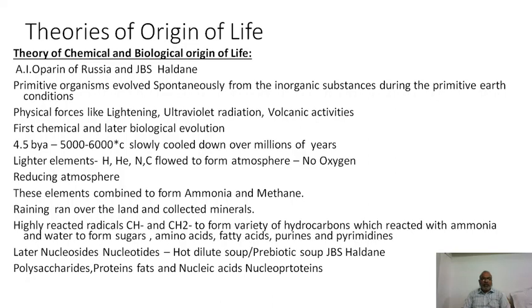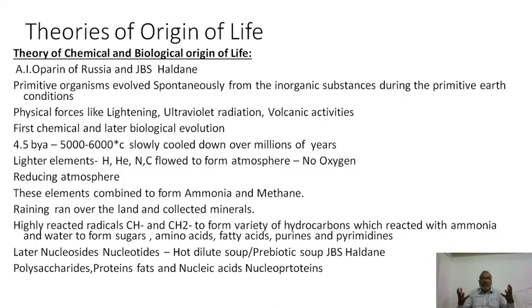Certain physical forces like lightning, ultraviolet radiation, and volcanic activities might have favored the origin of life. First, chemicals are formed, and later biological phenomena occurred. The earth and the entire universe might have formed 4.5 billion years ago. When earth was formed, the surface temperature was about 5,000 to 6,000 degrees centigrade — it was very hot, and almost all chemicals forming the earth were in the form of gaseous state.